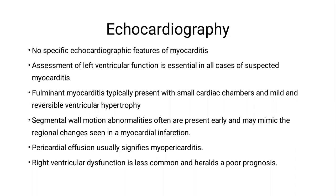In patients with fulminant myocarditis, the damage is very rapid, with no time for ventricular dilatation. The typical picture is a non-dilated ventricle with depressed ejection fraction, thickened myocardial wall with increased texture, and an edematous wall. Regional wall motion abnormality may be typical for coronary artery disease. Pericardial effusion usually signifies myopericarditis.